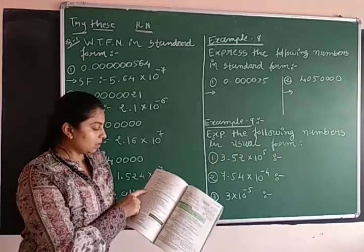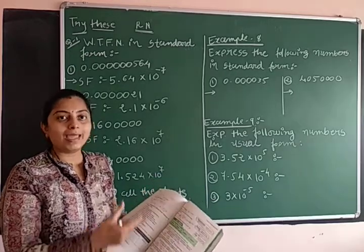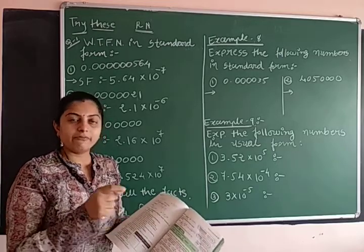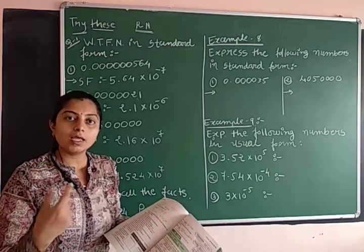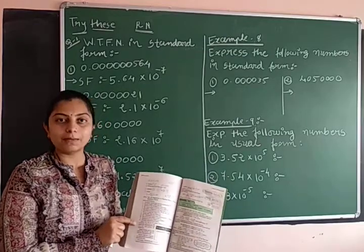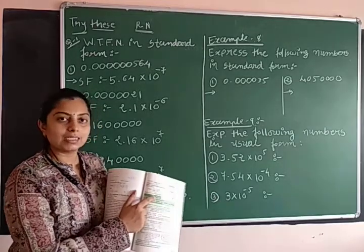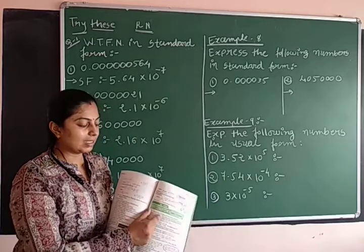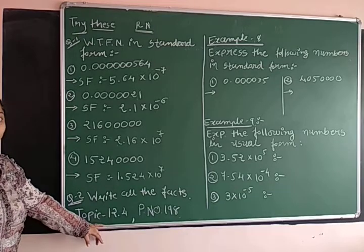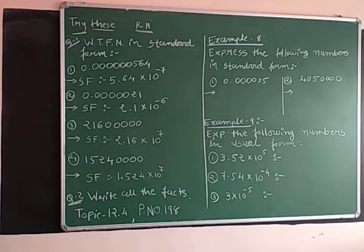Fourth point, the average diameter of red blood cell is given 0.0000007 millimeter. These basic facts are given just to get the idea of very large and very small numbers. So just copy these 12 points when you are writing this try this exercise. First try this exercise, then you go for the example.